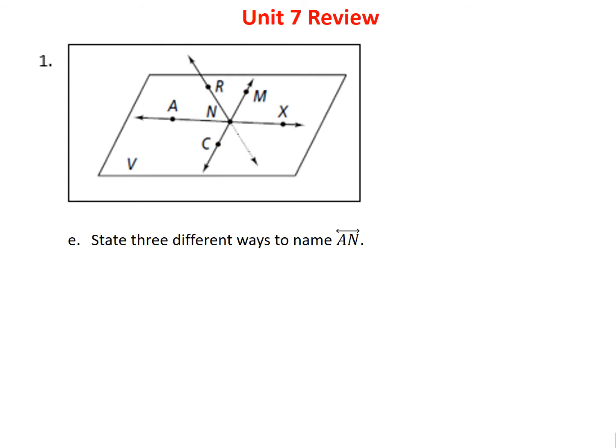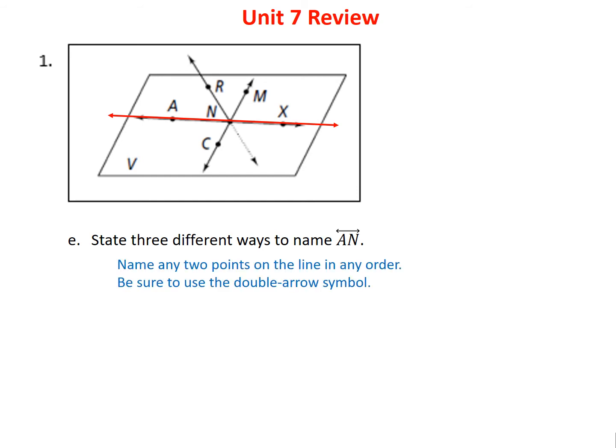Problem 1E asks us to state three different ways to name line AN. All we have to do is name any two points on this line in any order, making sure to use the double arrow symbol. With points A, N, and X, I can form: AX and XA, AN and NA, and NX and XN. So with three points, I've named six different ways to name the exact same line.